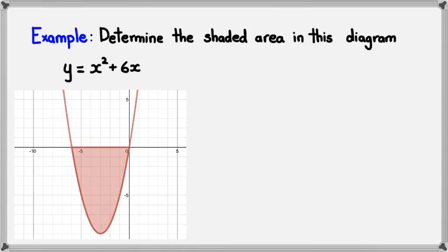But, we need the interval that we want to calculate it between. And so, it's going to be between 0 and negative 6. Okay, so, we're going to work out our integral between 0 and negative 6 for X squared plus 6X DX.